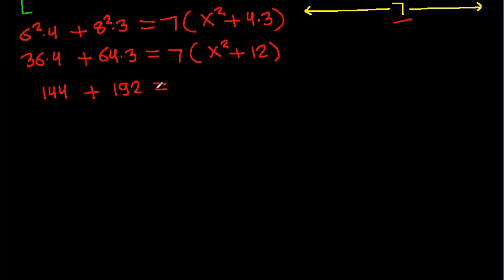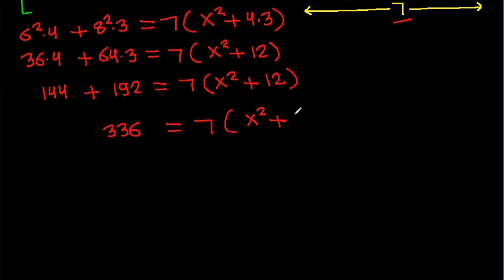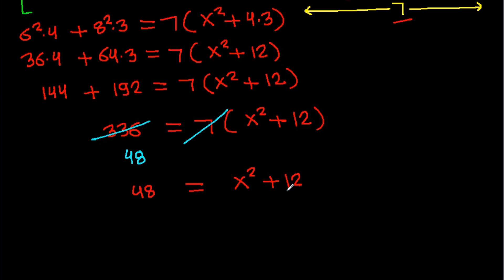So 192 plus 144 equals 7 times X squared plus 12. That gives 336 equals 7 times X squared plus 12. Subtracting 12, we get 324 equals 7 times X squared... simplifying, X squared equals 36.